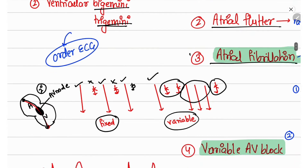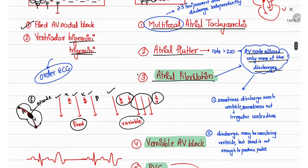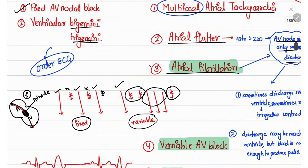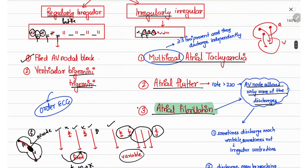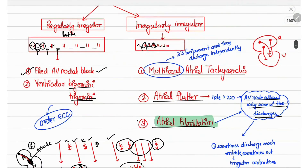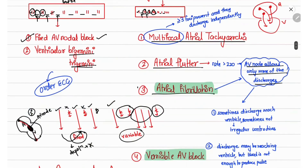With a fixed pattern of AV nodal block, every alternate time there will be no impulse reaching the left ventricle, so depolarization will not occur and no pulse will be generated. This leads to a regularly irregular rhythm, occurring due to failure of left ventricular depolarization.